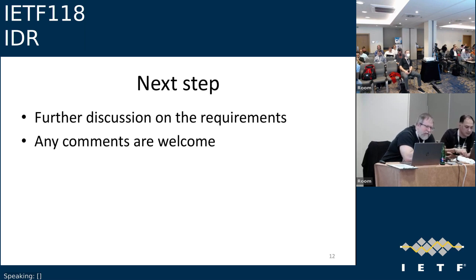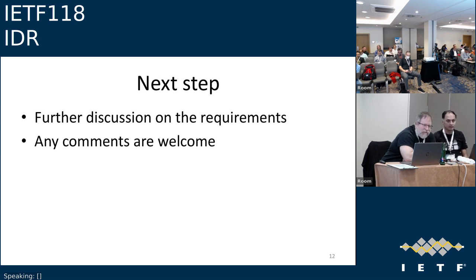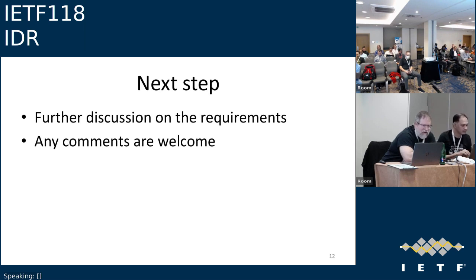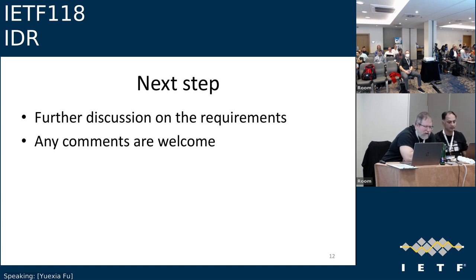Jeff: preempting the point the chair was going to make — the ADs look perplexed. If CATS is chartered for only intra-domain issues, there may be a suggestion about rechartering. But moving to relevant points: thank you for the presentation. This has been a good discussion about properties we'd want for something BGP or BGP-like for carrying CATS-like data. This presentation is more abstract than the prior two. The discussion probably needs to be scoped better — mostly in CATS, since that's where the work is being discussed, and then once we've gone there, we can look at how to make these things work in BGP.